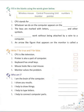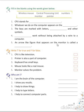Now, come to C. In this, you have to fill in the blanks using the words given below. CPU stands for Central Processing Unit. Whatever we do on the computer appears on the monitor. The keys are marked with letters, numbers, and other symbols. Wireless mouse works without being attached by a wire to a computer. An arrow-like figure that appears on the monitor is called a pointer.